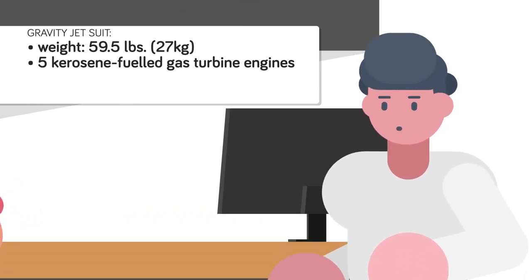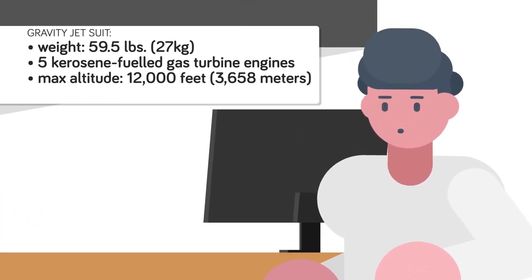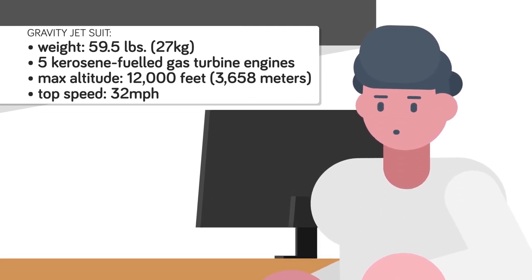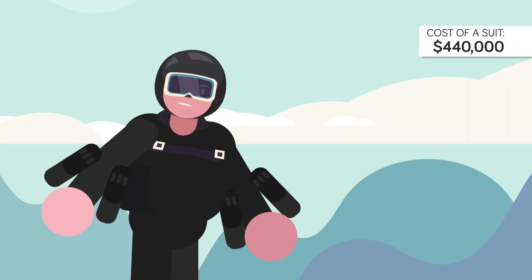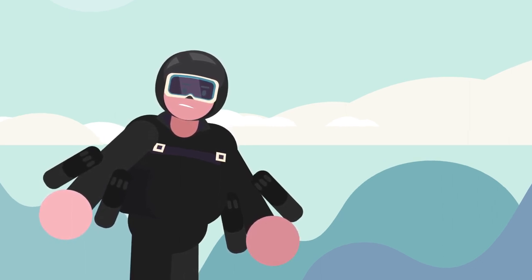The suit allows the wearer to fly at altitudes of 12,000 feet, with a top speed of 32 miles per hour. Each suit costs $440,000, so our writer could afford to buy two of them. But why would he want to buy two?